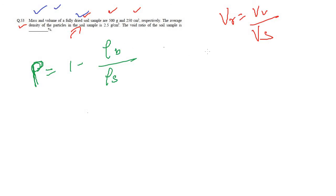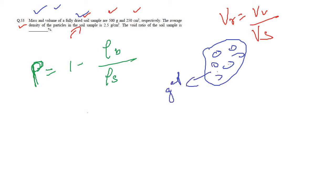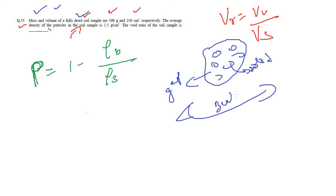Density of bulk we can find out because we are given the mass and volume of the fully dried soil sample. The fully dried soil sample has both the solid particles and the gaps — together they give us the bulk. Total mass and volume are given, so bulk density = 500 / 250 = 2 g/cm³.